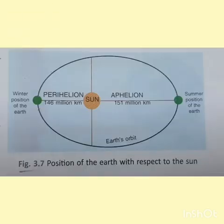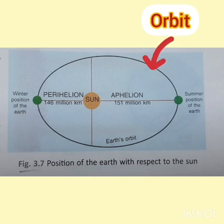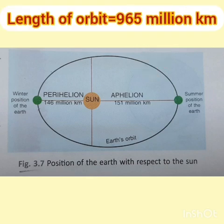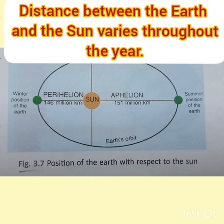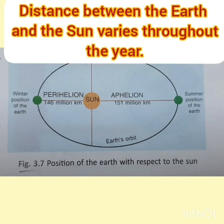The path along which the earth revolves around the sun is called the orbit, which is fixed. The length of the orbit is 965 million kilometers and the shape is oval or elliptical. Since the orbit is oval and the sun occupies only one focus of the ellipse, the distance between the earth and the sun varies throughout the year — the distance keeps changing as the earth revolves.